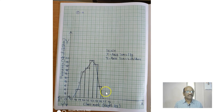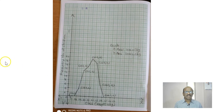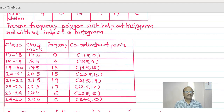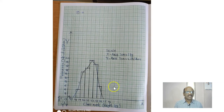Now we will see how to draw the frequency polygon without the help of the histogram, using the points. The points are: 17.5, 0; 18.5, 4; 19.5, 30; 20.5, 15; 21.5, 19; and so on. All the points are listed. Again the same scale is used, and you draw the frequency polygon with the help of the coordinates of the points.